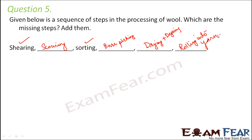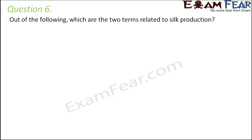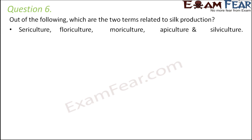Question number 6: out of the following, which are the two terms related to silk production? You have almost five terms here. What is sericulture? Sericulture is the rearing of silk worms, so yes, this is related to silk production because silk worms produce silk.